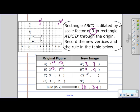Multiply by 3, 9. Multiply by 3, and we get 6. So C prime is at 9, 6.